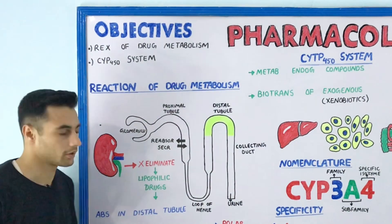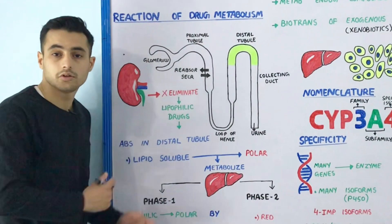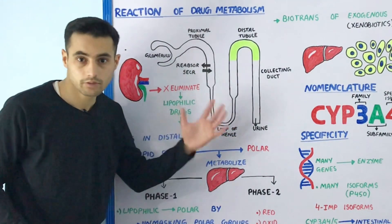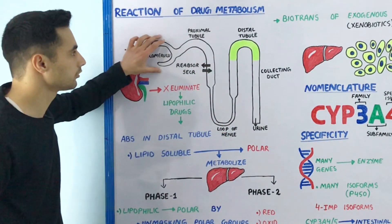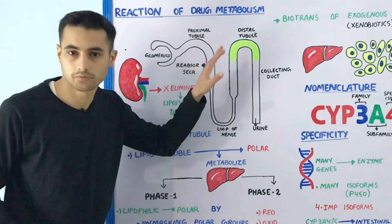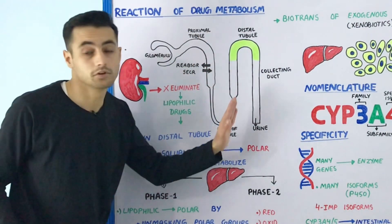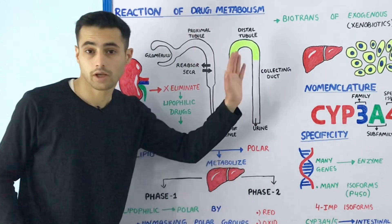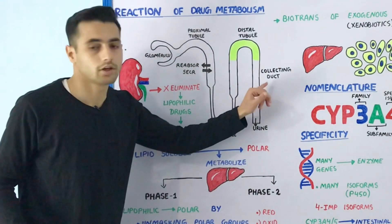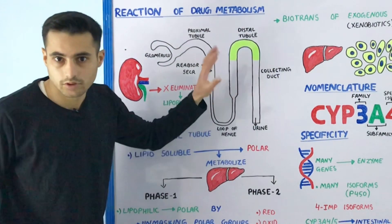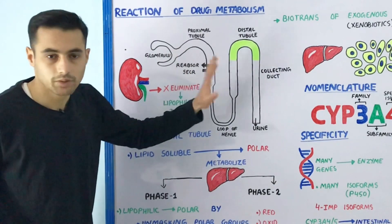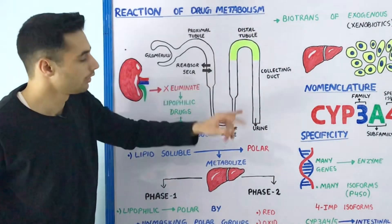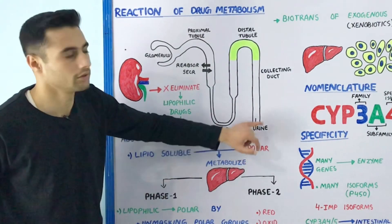Have a look at this diagram. In our kidney you have millions of nephrons. A nephron consists of the glomerulus portion, the proximal convoluted tubule, then we have the loop of Henle, the distal convoluted tubule, and finally the collecting duct. The lipophilic drugs cross the membranes and are again reabsorbed into the distal tubule — they are not eliminated in the urine.